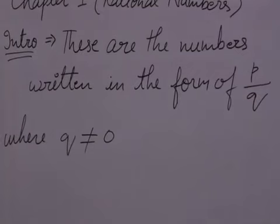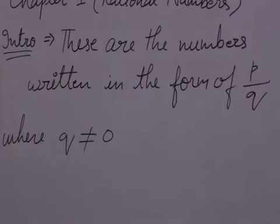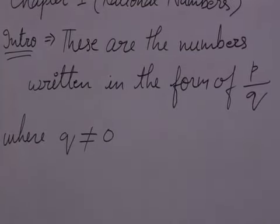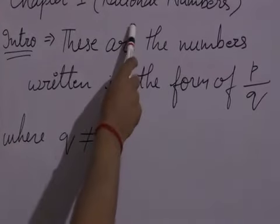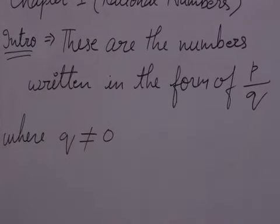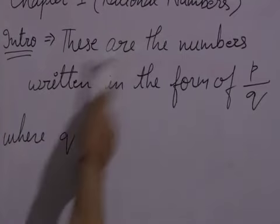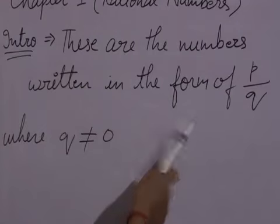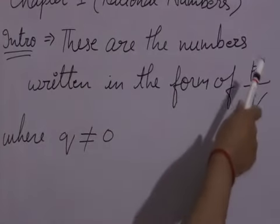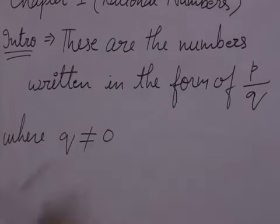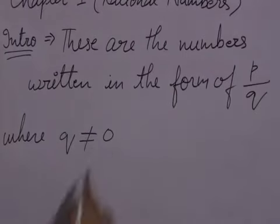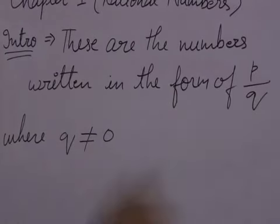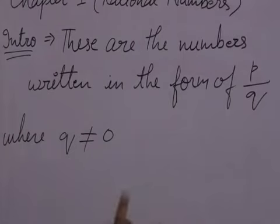As you already read in your previous classes about Rational Numbers, today I am giving you the introduction again. Rational Numbers are those numbers that can be written in the form of P upon Q, where Q is never equal to 0 — that means our denominator should never be 0.